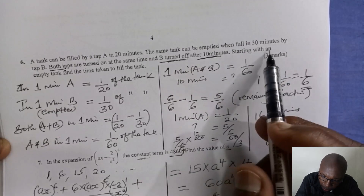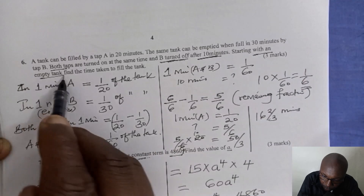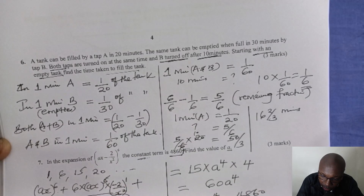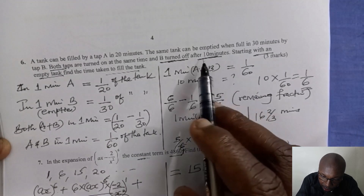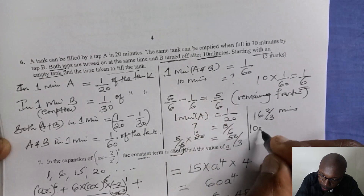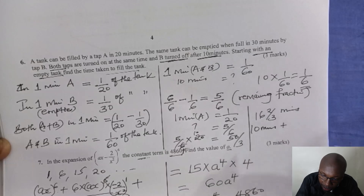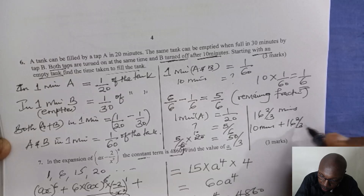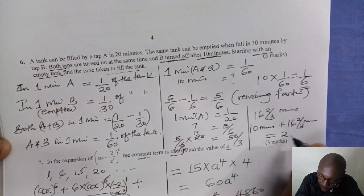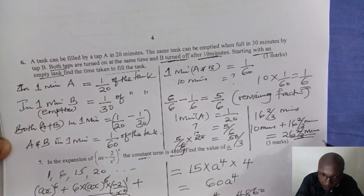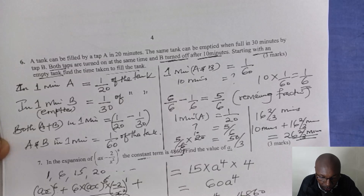Starting with an empty tank, the overall time taken to fill the tank is the sum of both phases. There was initially 10 minutes used by A and B running together, plus the 16 and 2 thirds minutes when A was left alone. So the total time will be 26 and 2 thirds minutes. That is how you solve this question. Thank you.